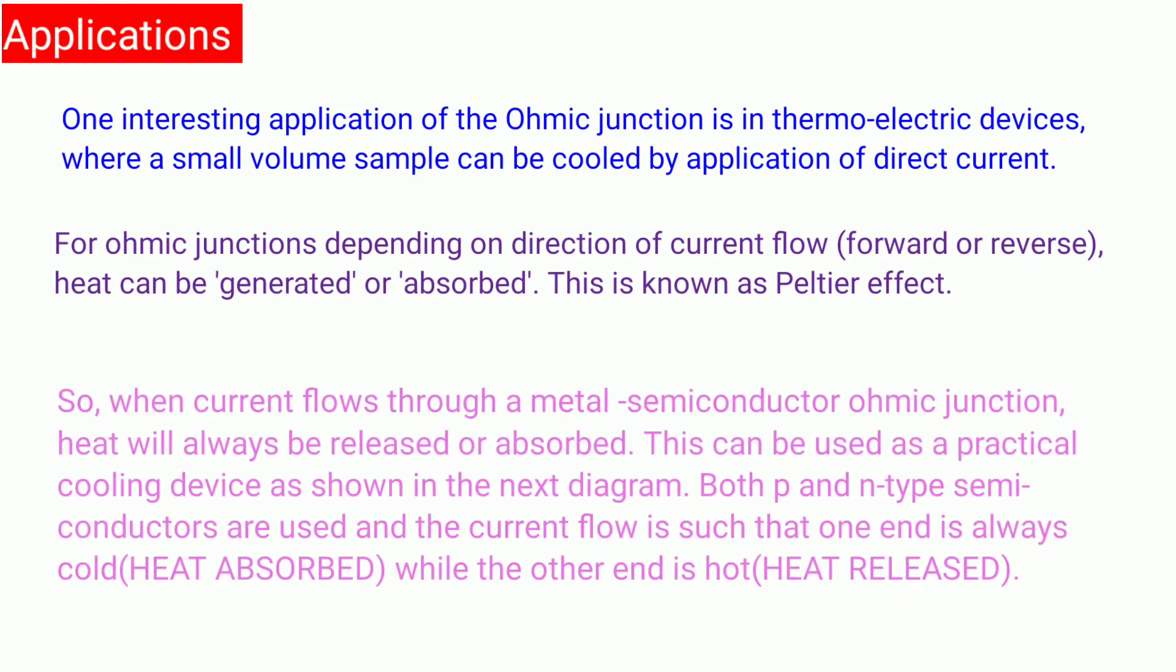So when current flows through a metal semiconductor ohmic junction heat will always be released or absorbed. This can be used as a practical cooling device as shown in the next diagram. Both P and N type semiconductors are used and the current flow is such that one end is always cold while the other end is hot.